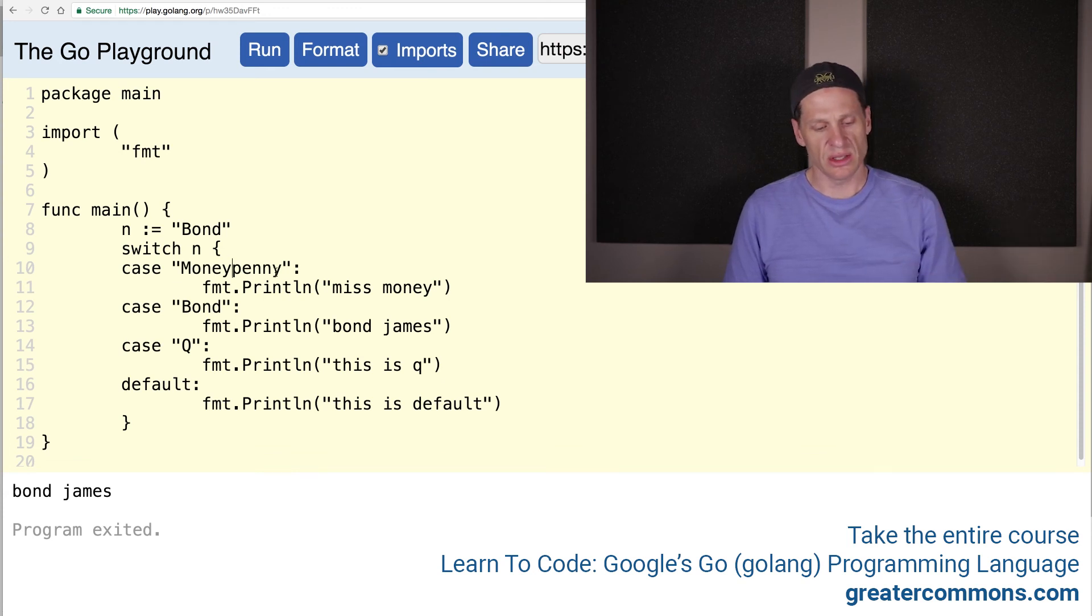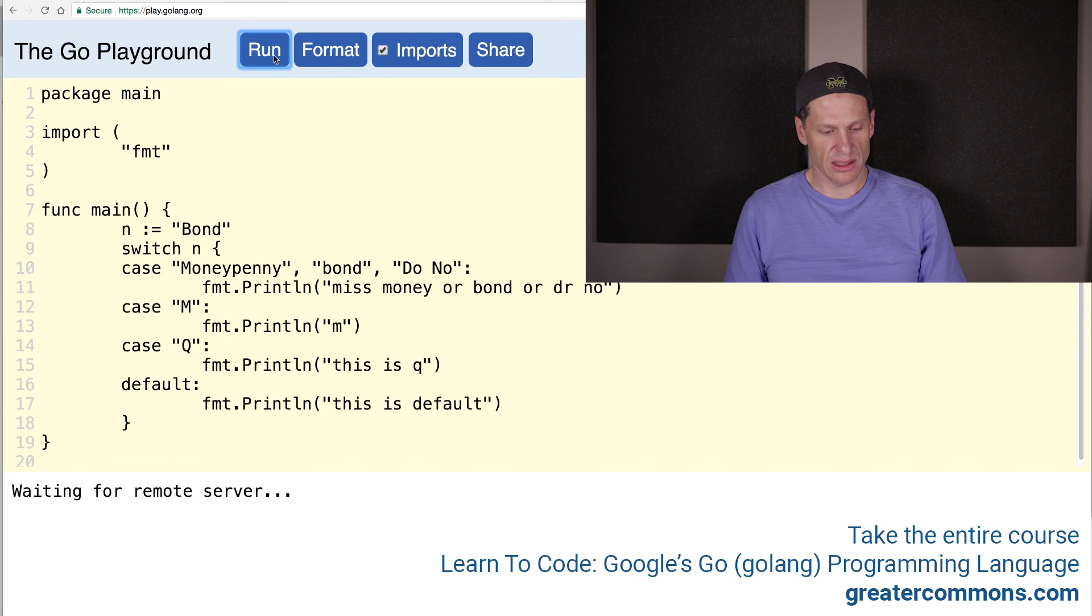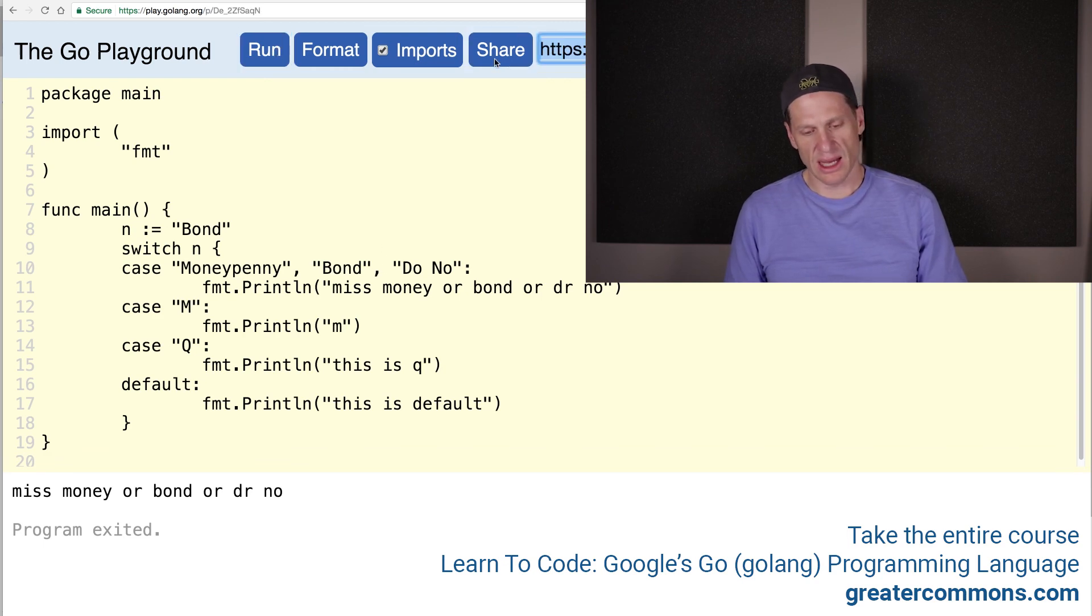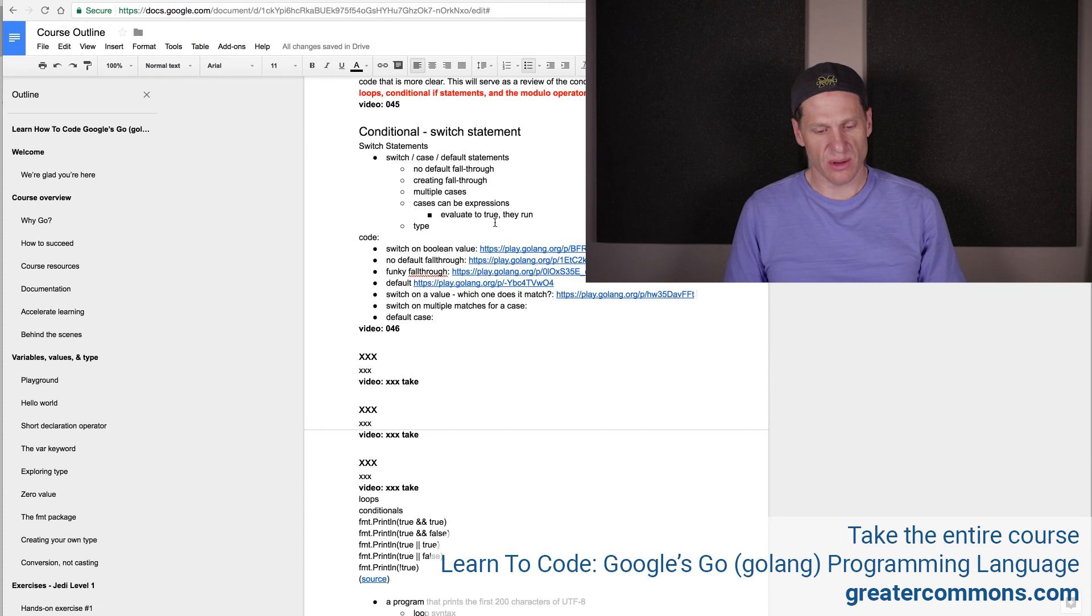And then the last one I'll show you is you could have multiple cases. You just put commas. And this one will make M. And then format it and run it. This is default because I have lowercase b. Let's make it uppercase. There we go. So it switched on that one.